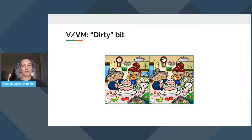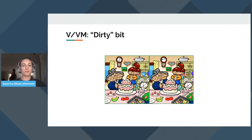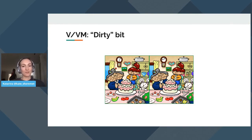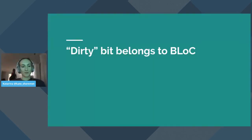After that, we look at the dirty bit. A dirty bit is a concept where the object was changed from what it was at the beginning. BLoC is in a much better position to keep track of this bit, since it knows which UI elements are mutating the data and it also has the initial data to compare to. Therefore, the dirty bit belongs to business logic — to the BLoC.